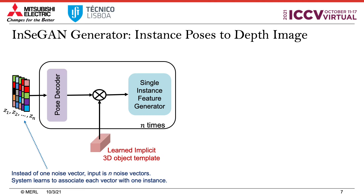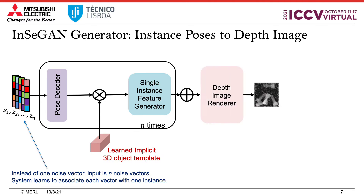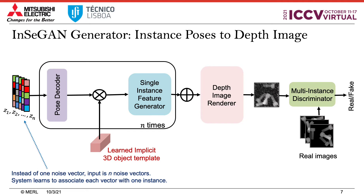These steps are repeated N times to generate N object feature vectors, which are then agglomerated via average pooling and rendered via a depth image renderer CNN to produce a multiple-instance depth image. The distribution of such generated images is then discriminated against the real input depth images.